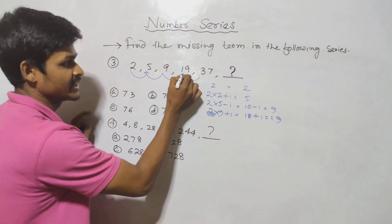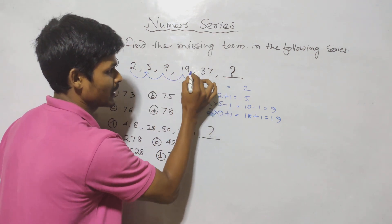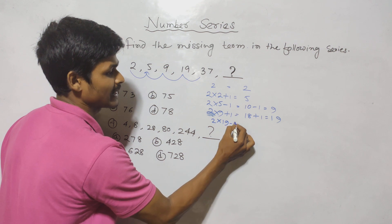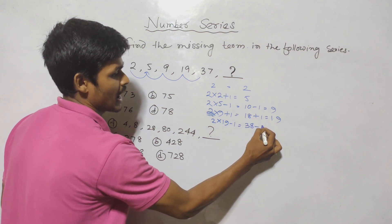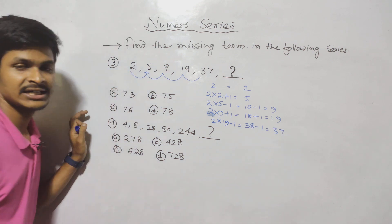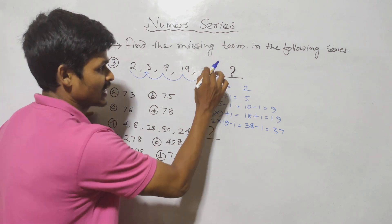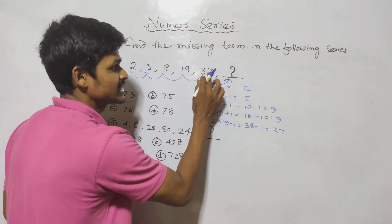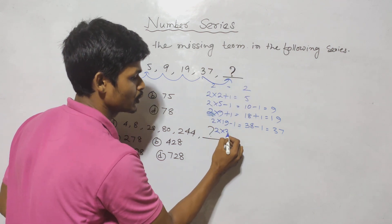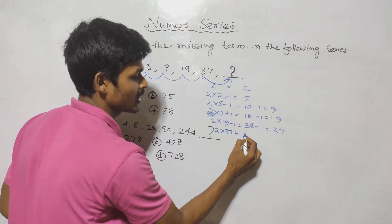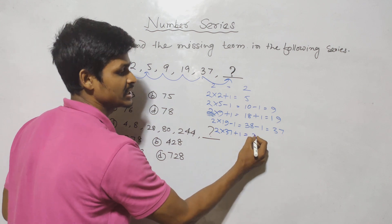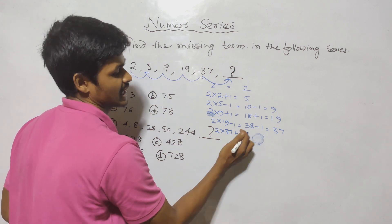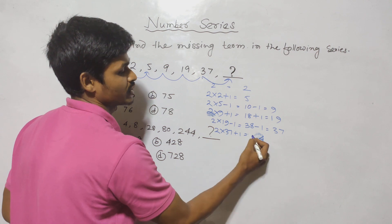18 plus 1 is 19. 19 is confirmed. Then 2 times 19 minus 1: 38 minus 1 equals 37. That is confirmed. Then 37 times 2 equals 74, plus or minus 1. So 37 is 2 into something minus 1.